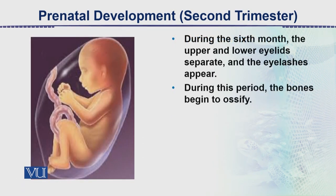During the 6th month, the upper and lower eyelids separate and eyelashes start appearing. During this period, the bones begin to ossify.